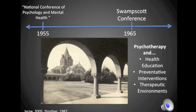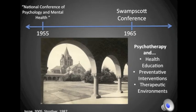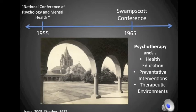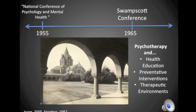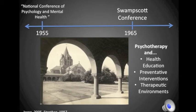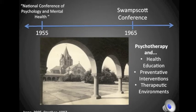Despite some barriers, the Stanford Conference was successful at bringing attention to the need for holistic training for psychologists. The majority of the conference attendees were trained in clinical psychology and traditionally used psychotherapy to treat patients. At the conference, the psychologists discussed the need for more diverse training in areas such as health education, preventative intervention, and the use of therapeutic environments. It is here that we see the field of psychology beginning to recognize the importance of person-environment interactions.